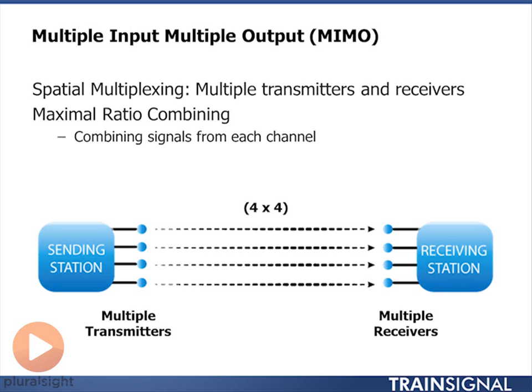MIMO stands for multiple antennas inputting into the RF medium and multiple antennas outputting from the RF medium. The 802.11 standards support a 2x2 MIMO — two transmit and two receive antennas — all the way up to a 4x4 MIMO.